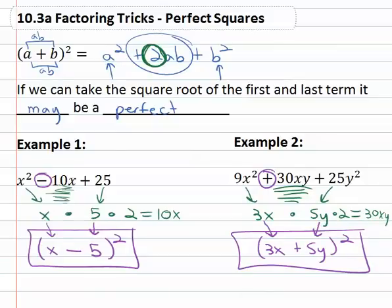If we can take the square roots of the first and last terms, we may have a perfect square. It's important to note that if you do factor this the other way, the old way.